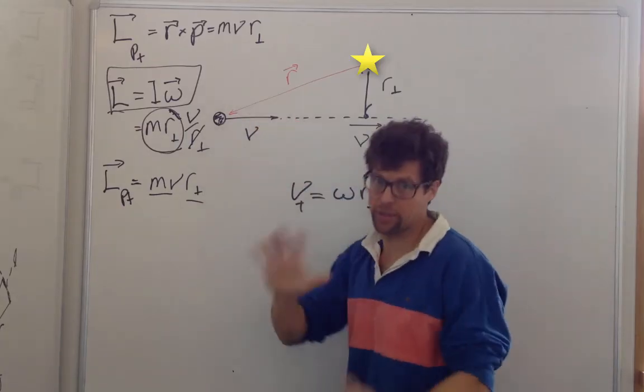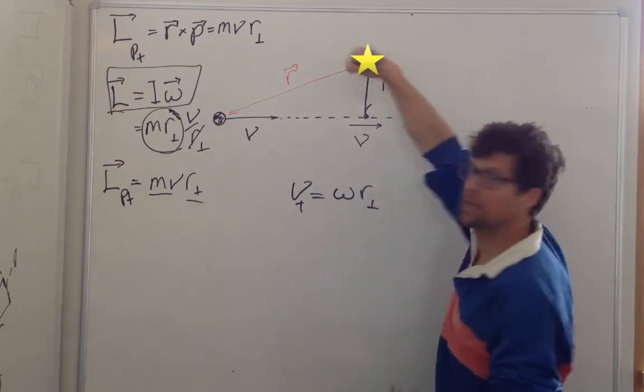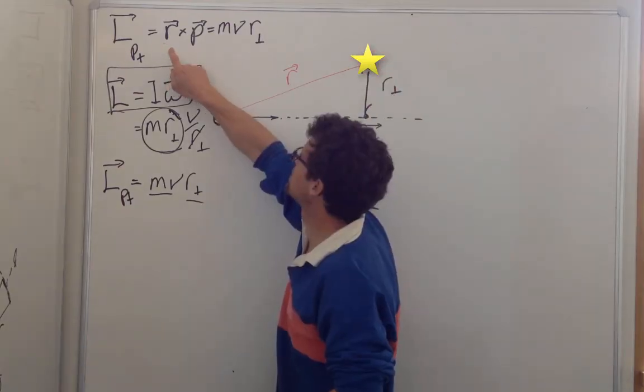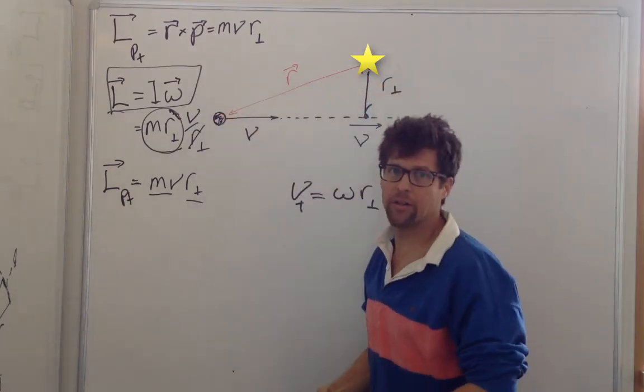I can check the cross product just to see if my direction is correct, because after I catch it, I know I'm rotating this way, and that is out of the board. And so let's see, r cross momentum is, sure enough, out of the board.